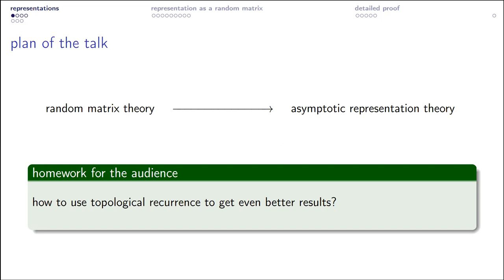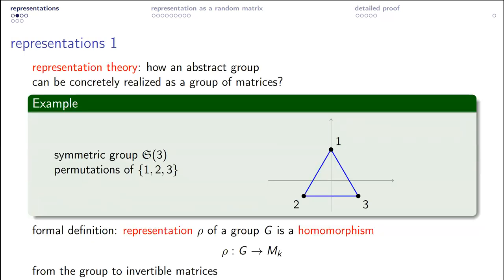Maybe it's a good idea to give a small crash course on what representation theory and asymptotic representation theory are about. Representation theory studies concrete ways in which abstract groups can be realized as concrete groups of matrices. For example, here we have a triangle on the plane drawn so that the center of mass is at the origin, so that any permutation of three symbols defines an isometry of the triangle — a linear isometry — giving us a two-by-two matrix.